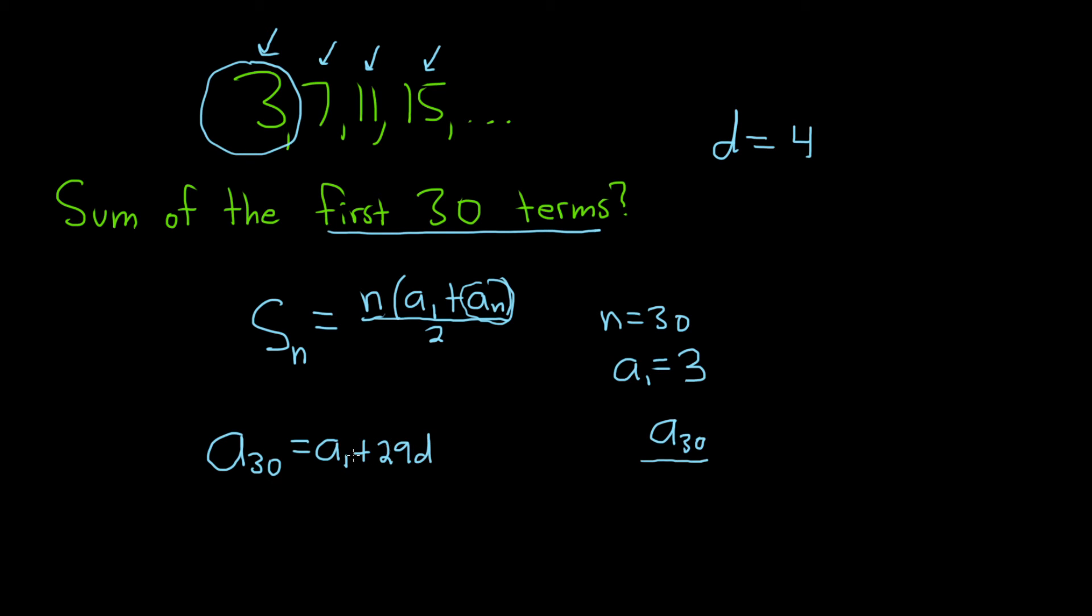That will always work every single time. So we're looking for a sub 30, we know a sub 1, that's equal to 3, plus 29. And we know d, d is equal to 4. That's the number that we add over and over again, so times 4.